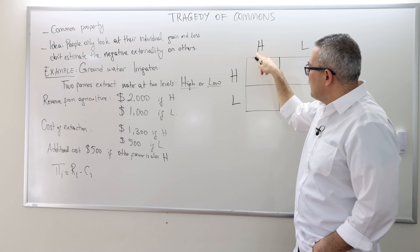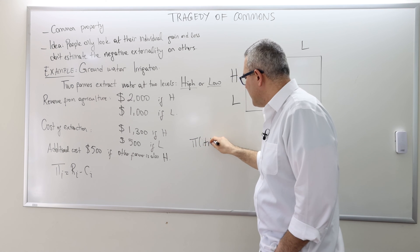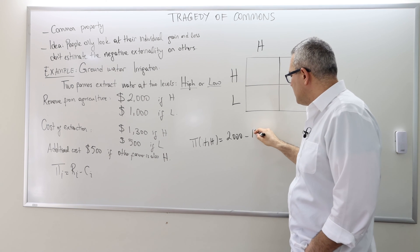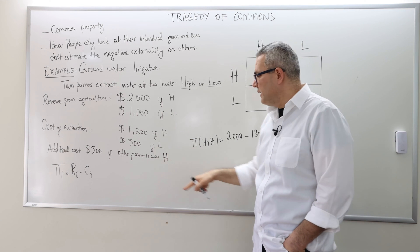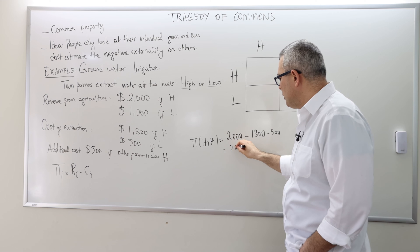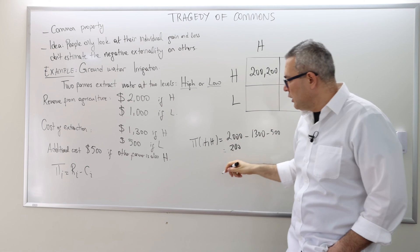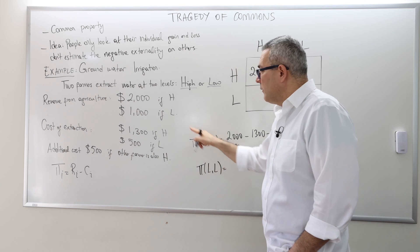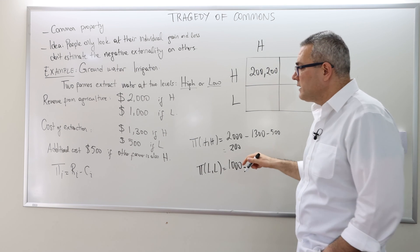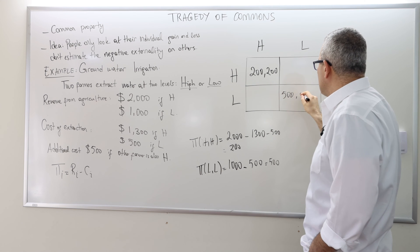Given that both farmers extract high, the profit is $2,000 revenue minus $1,300 cost, and because the other is also choosing high there's an additional $500 cost, so that's 700 minus 500 equals $200 net profit. So this cell is (200, 200). If they both choose low, each makes $1,000 revenue minus $500 cost with no additional cost, so the total profit is $500 each — giving (500, 500).